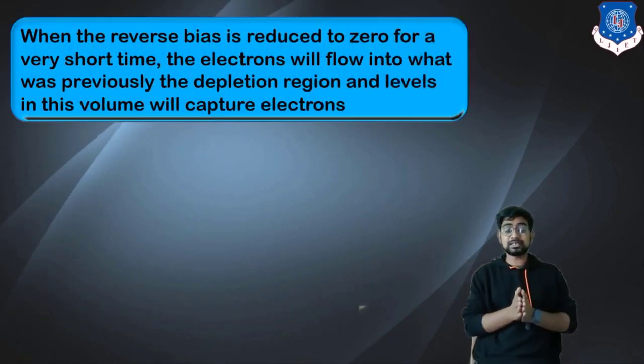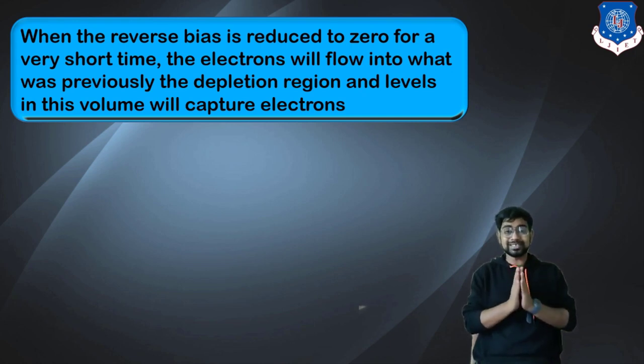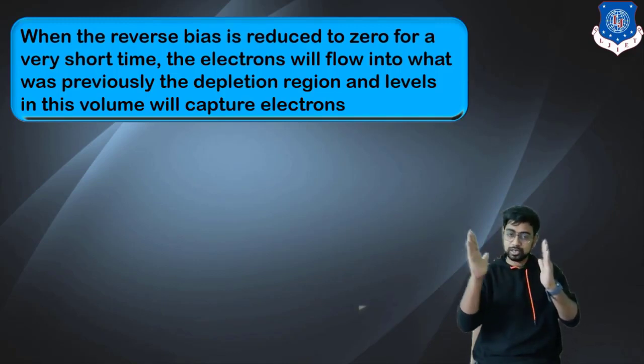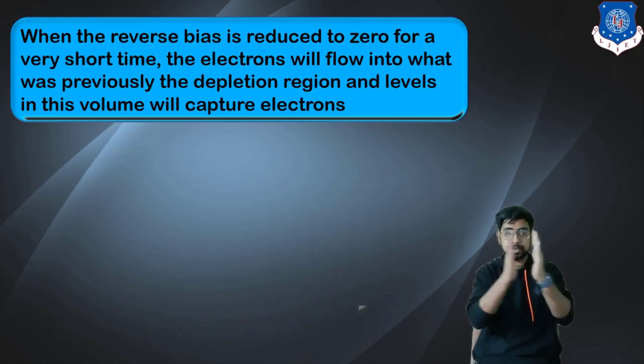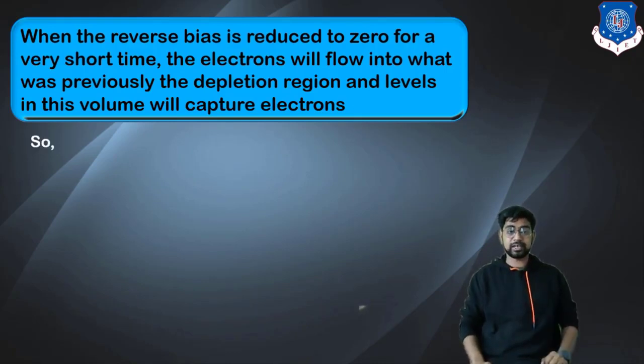When the reverse bias is reduced to zero for a very short time period, electrons will flow into what was previously the depletion region and this level in volume will capture electrons. When the depletion width is reducing, the electrons are moving along with it. But as soon as you remove that pulse, it is coming back to its own position. Meanwhile, the electrons trying to return with the depletion region are getting filled up into the trap. That's where we are getting the trap.